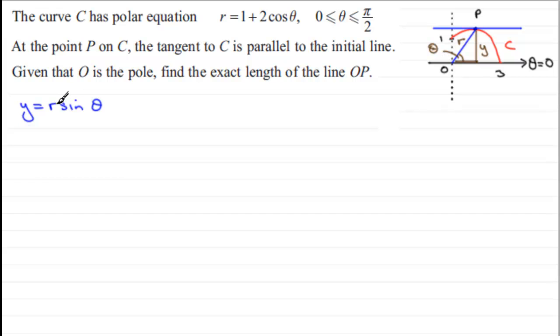But at the moment we have got the variable r and we've got the variable theta. So what we can do is call upon our equation up here, which is that r equals 1 plus 2 cos theta. And if I just number that equation 1, what we're going to do is sub 1 into here.